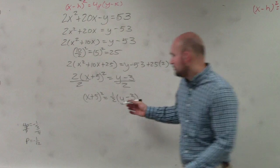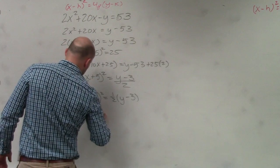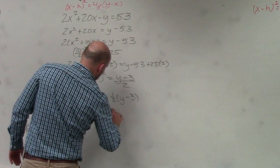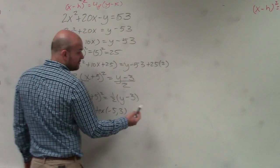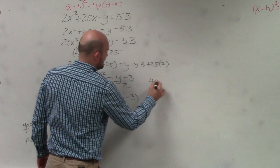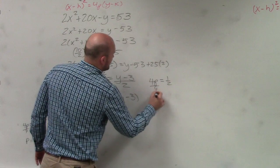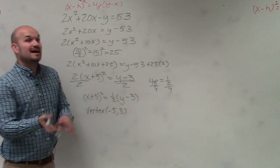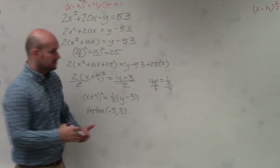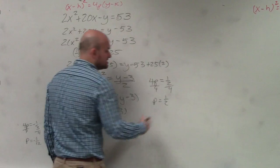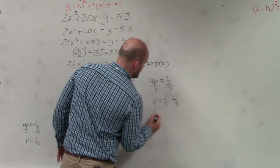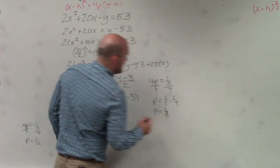Now, is this finally in a format that we somewhat understand? Yes. We know that the vertex is negative 5, 3. We know that the value of p, we actually don't know the value of p. So we do 4p equals 1 half. Divide by 4, divide by 4. Dividing by a number is the same thing as multiplying by its reciprocal, correct? So in reality, I could say dividing by 4 is the same thing as multiplying by 1 fourth, which is 1 eighth.